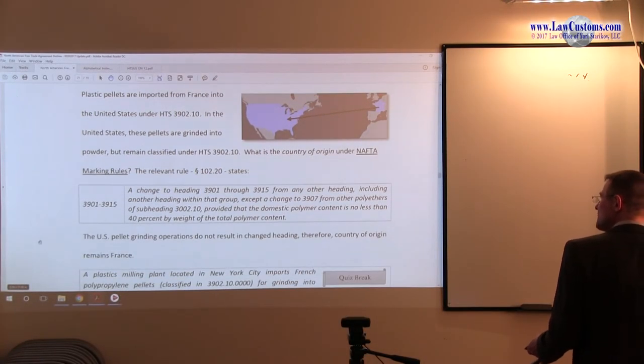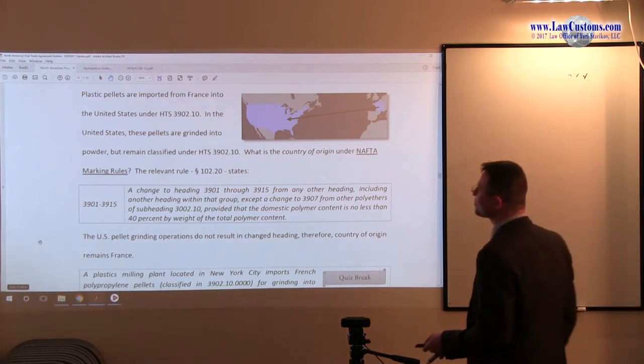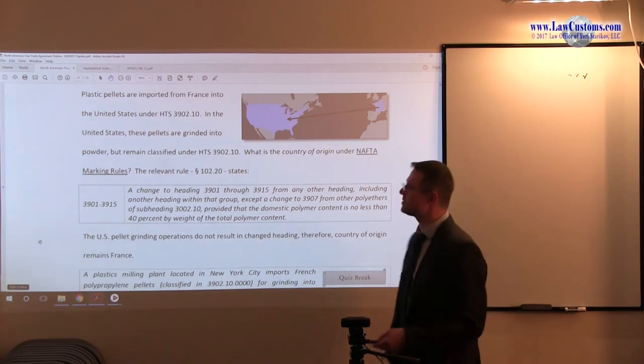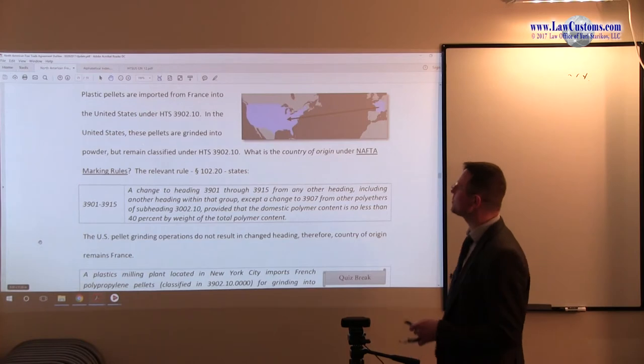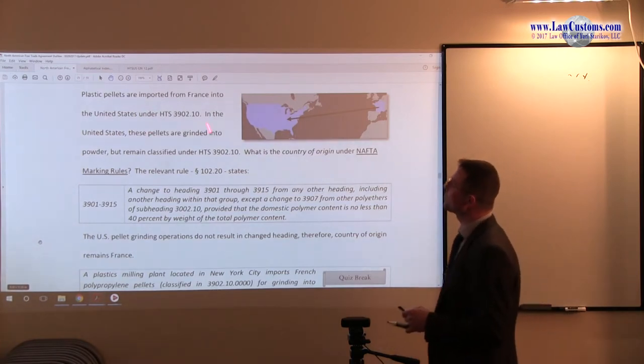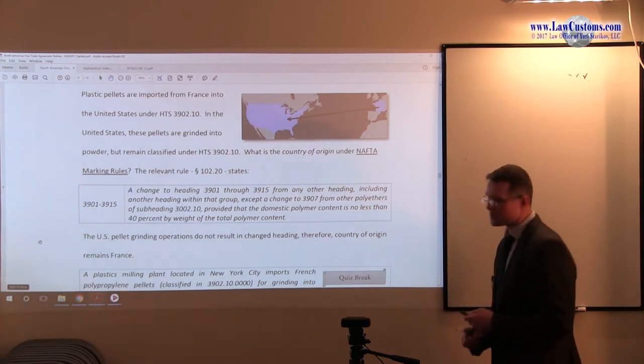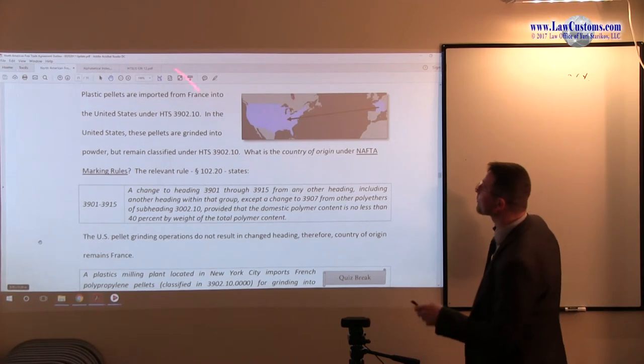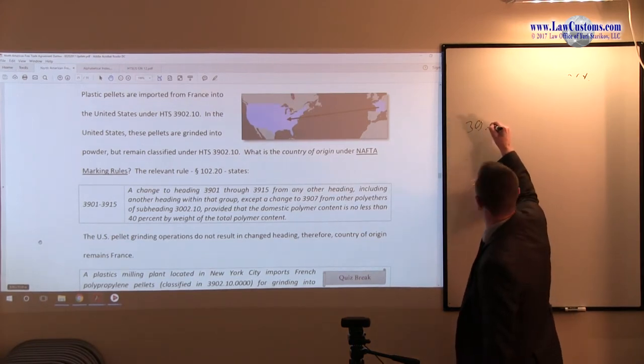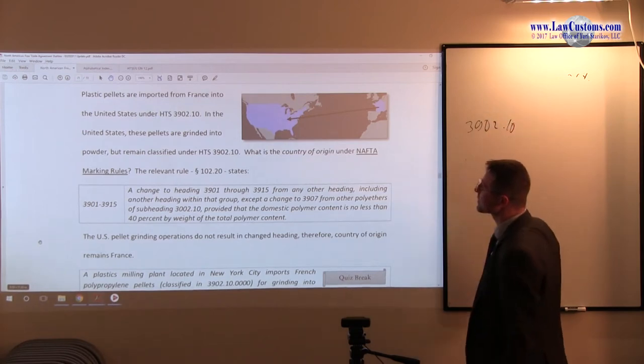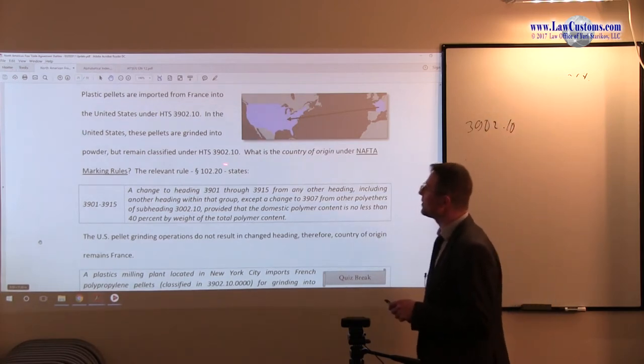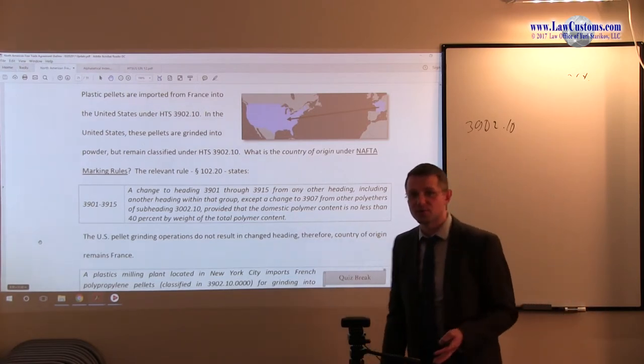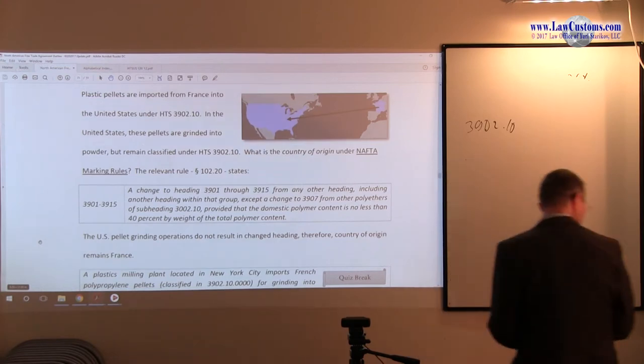Moving out from the world of textiles to other non-textile stuff, we have the following hypothetical: plastic pellets are imported from France into the United States, available under HTS-US 39.02.10. In the United States they are ground, but their tariff classification remains the same. So the question is, is there a country of origin change, is there a shift?